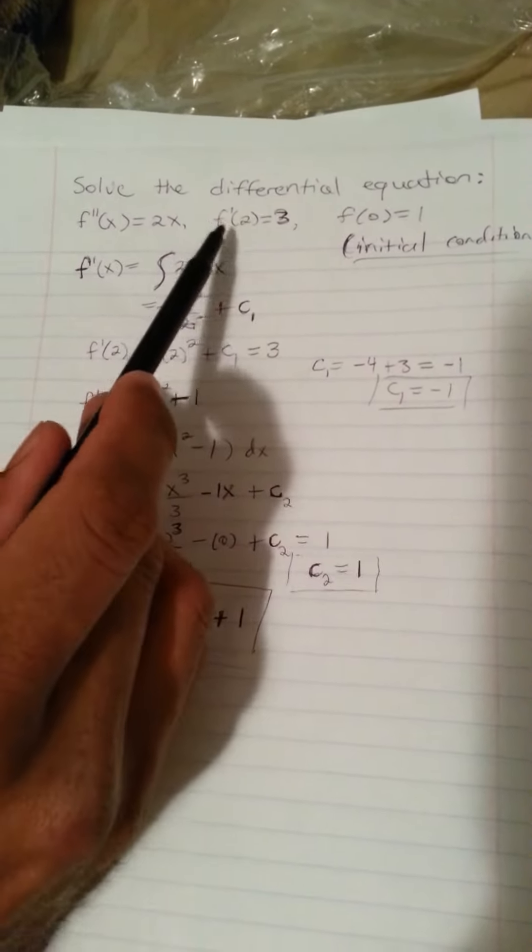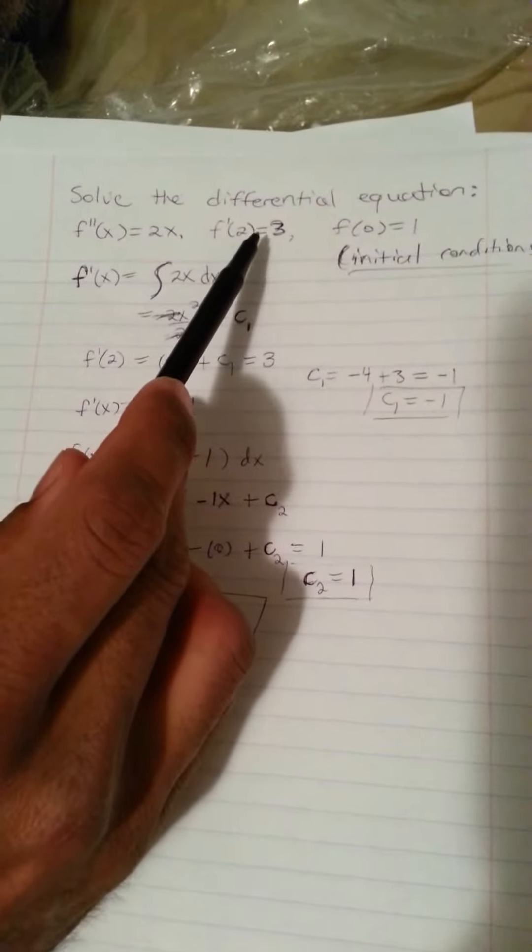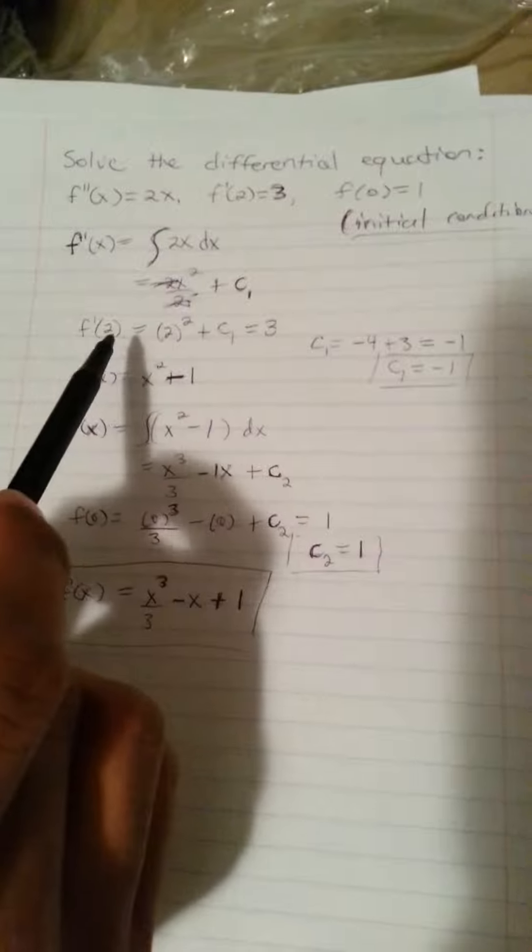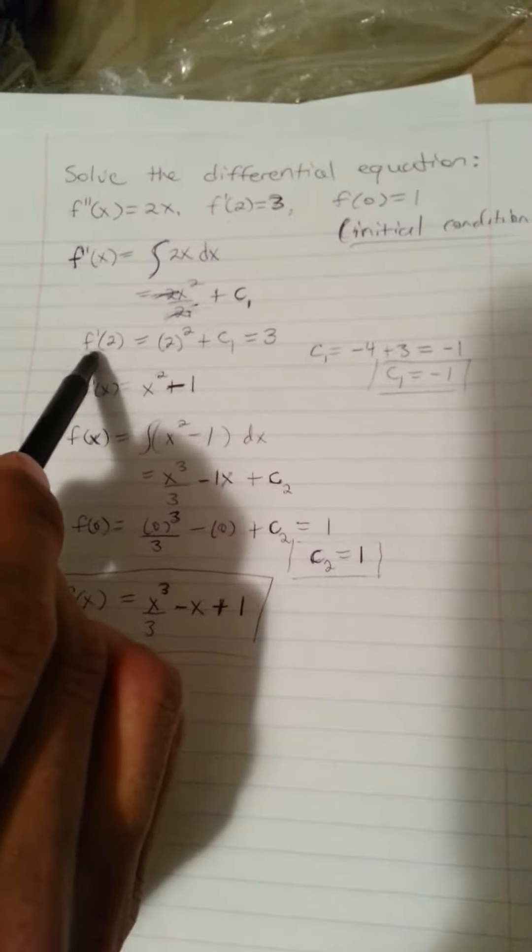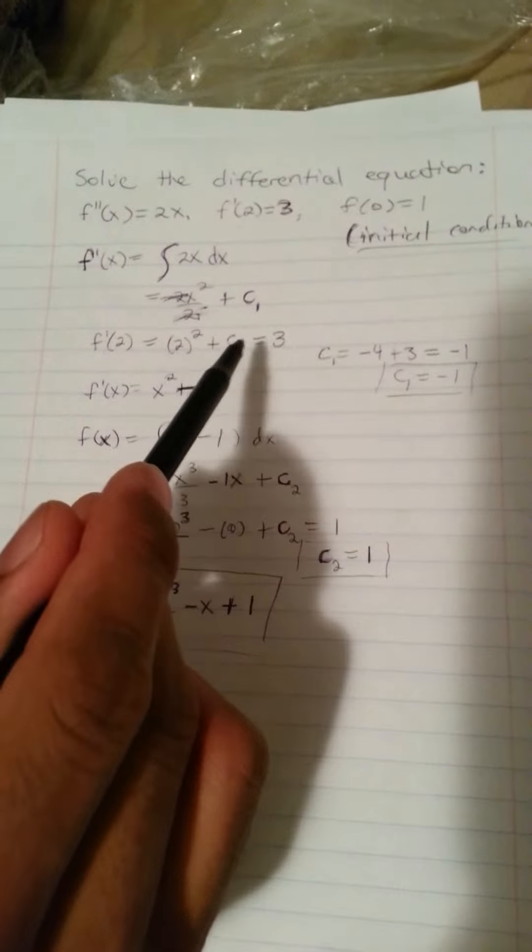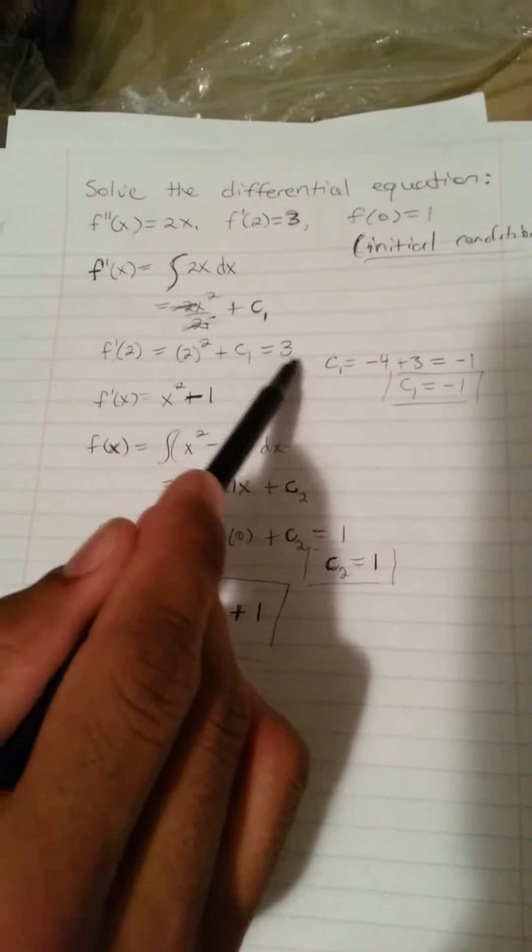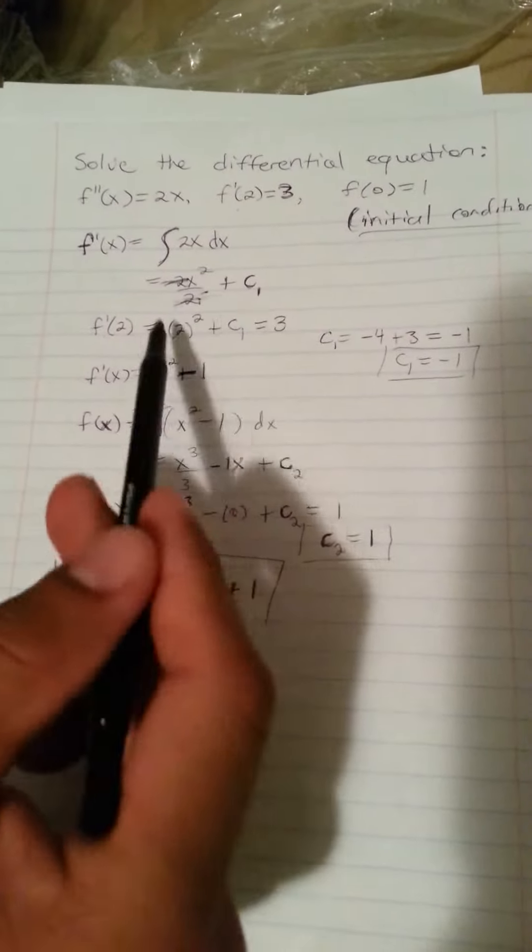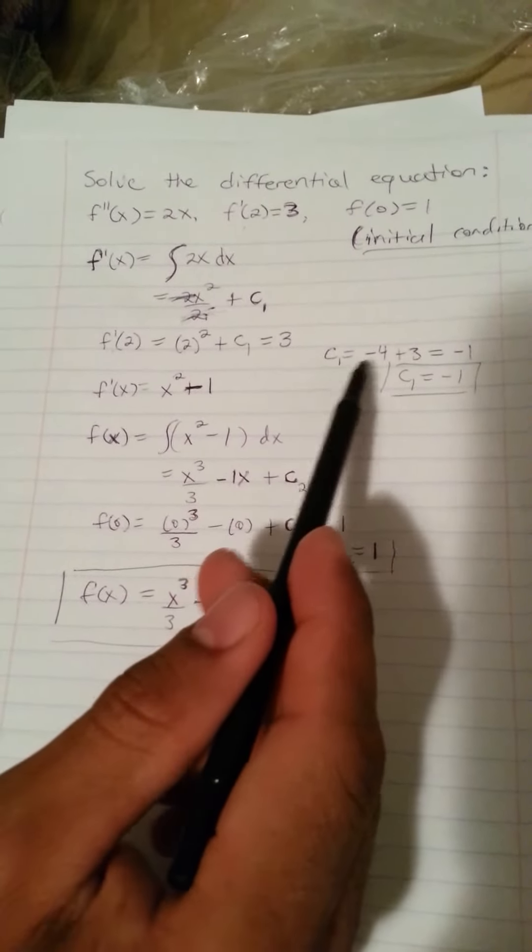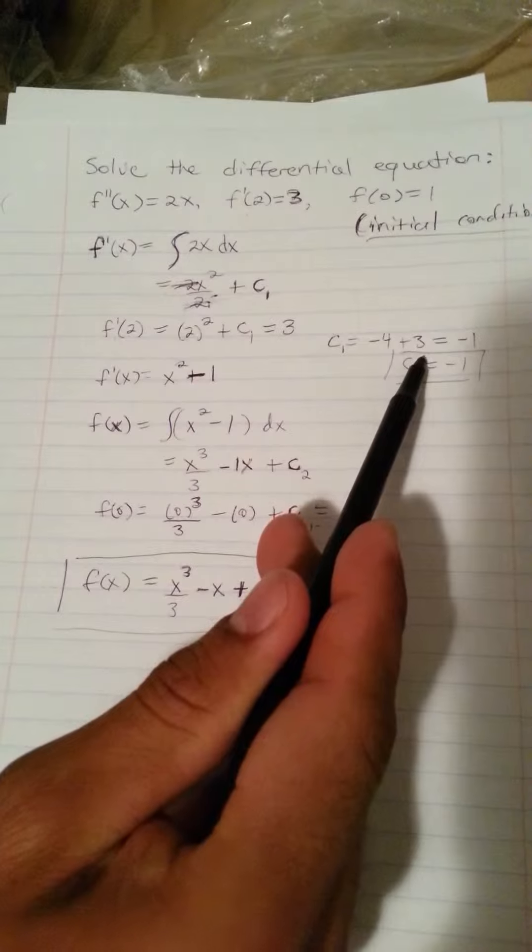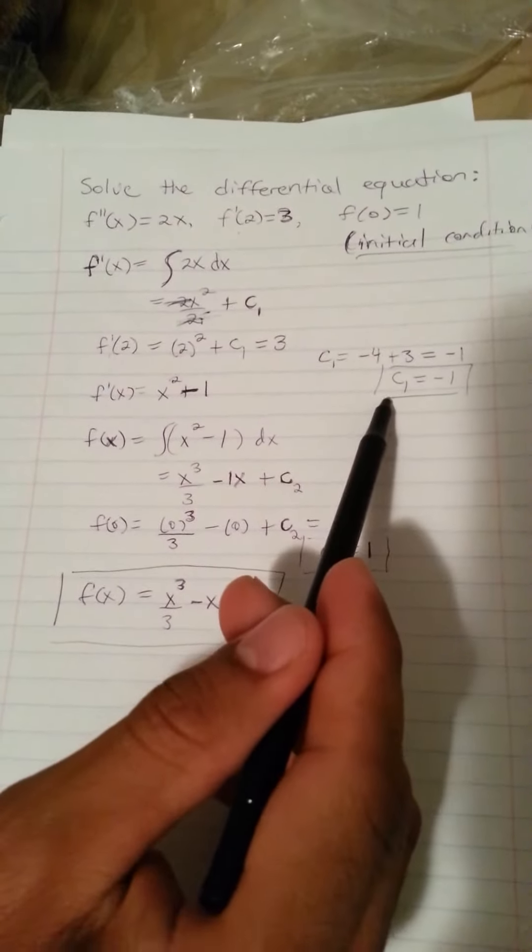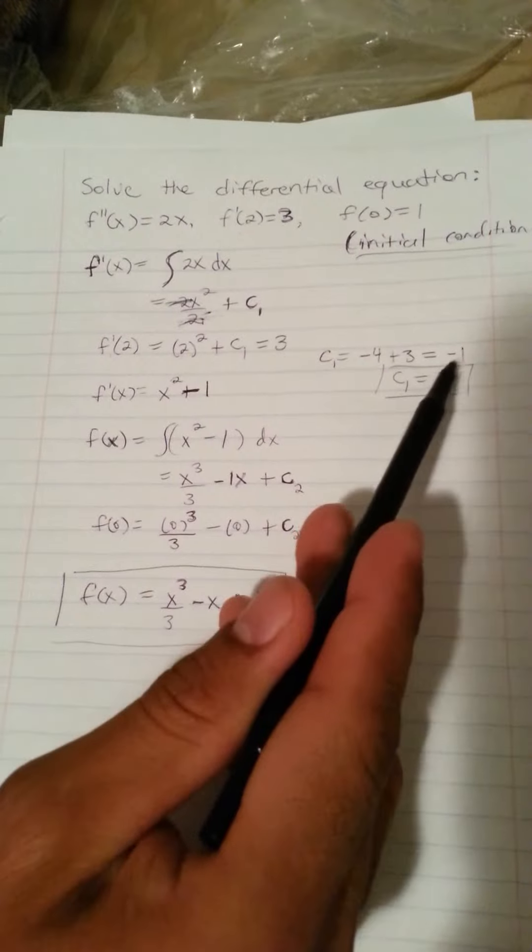So now with this condition where f prime of 2 is equal to 3, we can utilize this to find out what c sub 1 is. So f prime of 2 equal to 2 squared plus c sub 1 and set it equal to 3. So I just plug 2 in for my x's, and I solve it out. I end up with c sub 1 is equal to negative 4 plus 3, which is negative 1. So there is the c sub 1, which is negative 1.